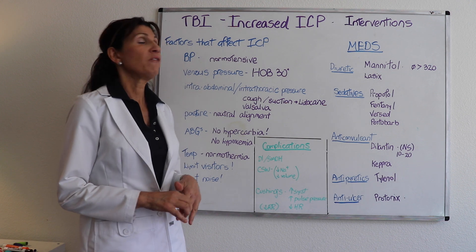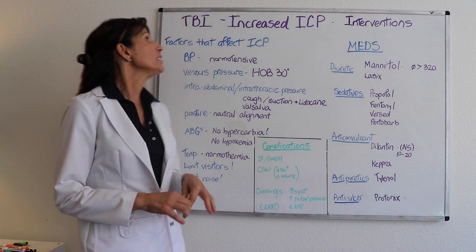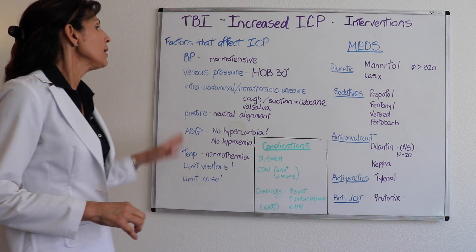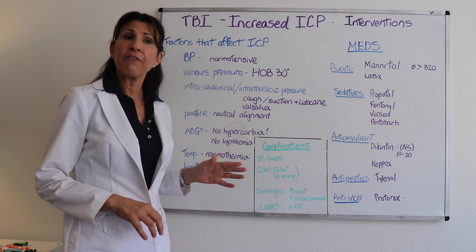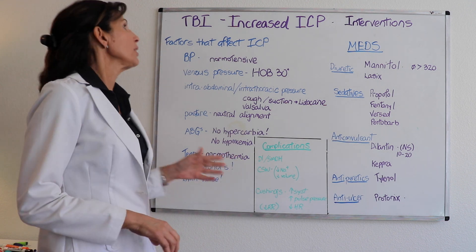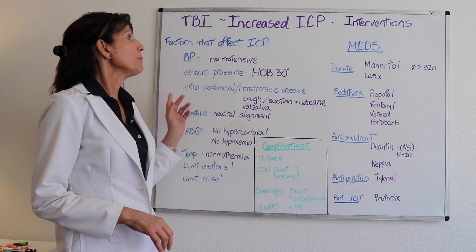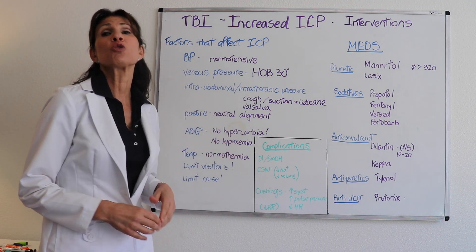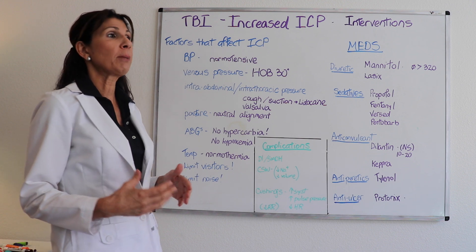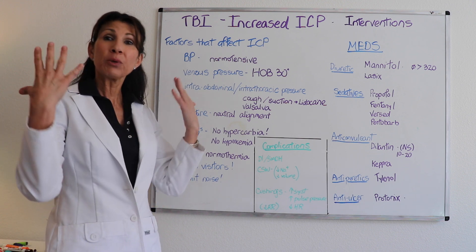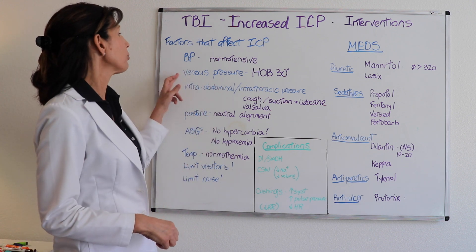Let's talk about general interventions for a patient with increased ICP. Let's look at factors that affect intracranial pressure. First of all, blood pressure — you want to make sure your patient is normotensive. An increase in blood pressure is also going to increase intracranial pressure.